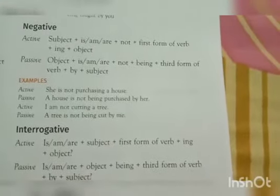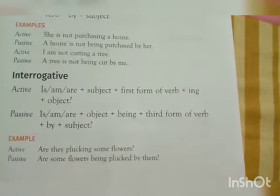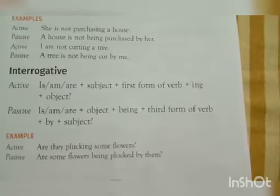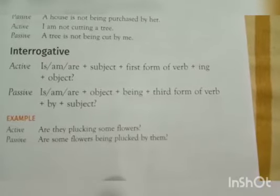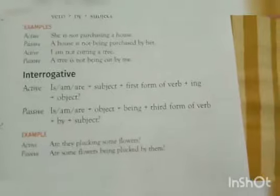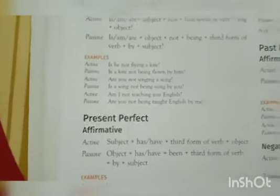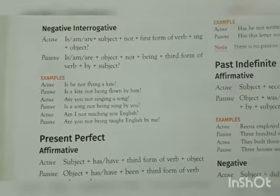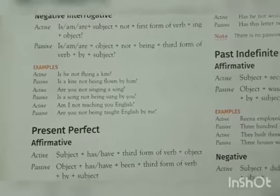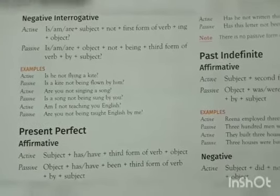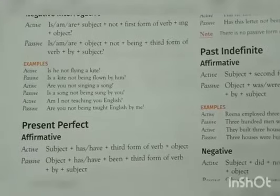For the interrogative form, is/am/are come at the starting, followed by the subject, first form of verb plus -ing, and the object, ending with a question mark. For example: 'Are they plucking some flowers?' becomes 'Are some flowers being plucked by them?' For negative interrogatives: 'Is he not flying a kite?' becomes 'Is a kite not being flown by him?' 'Are you not singing a song?' becomes 'Is a song not being sung by you?' 'Am I not teaching you English?' becomes 'Are you not being taught English by me?'